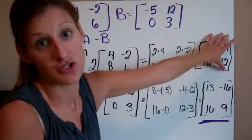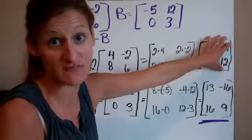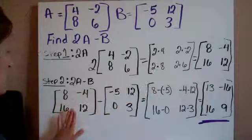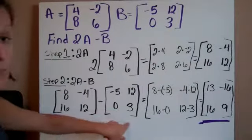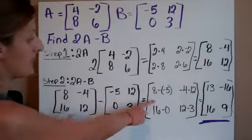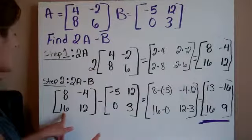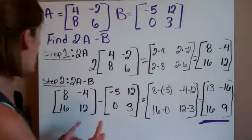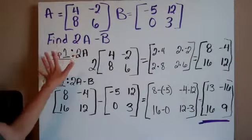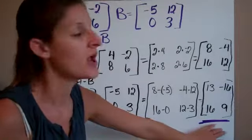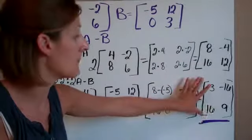2 times A is right here. So I take this matrix I have just gotten, take it down here. Now I am going to subtract this B matrix. So I do subtract, rewrite the B matrix. Now I do 8 minus negative 5, which is 13. Negative 4 minus 12, which is negative 16. 16 minus 0, which is 16. And 12 minus 3, which is 9. The answer to this whole thing is going to be this last one, this matrix down here. Notice all my matrices are the same size, a 2 by 2, and my answer is in brackets.